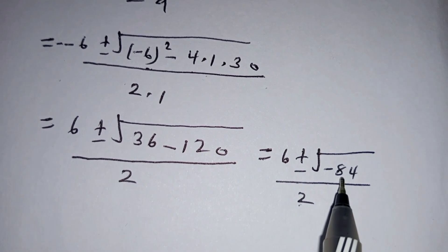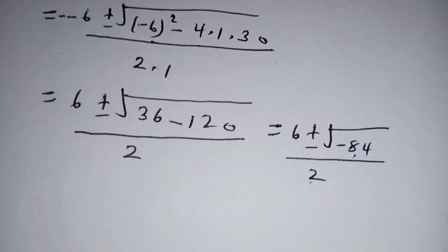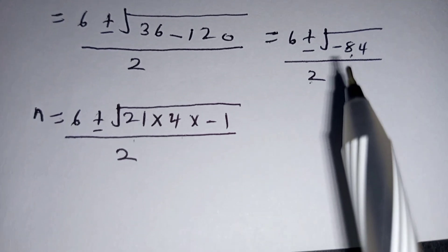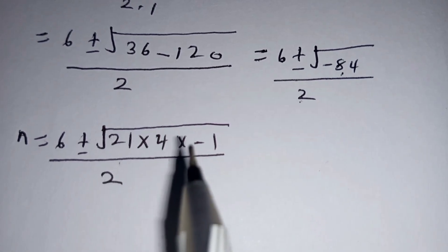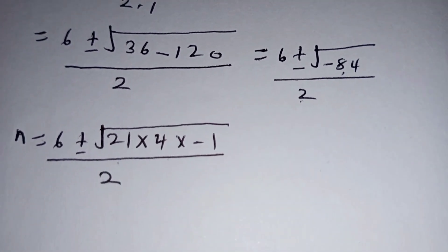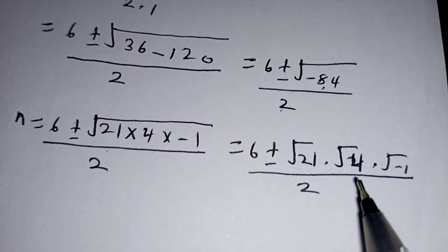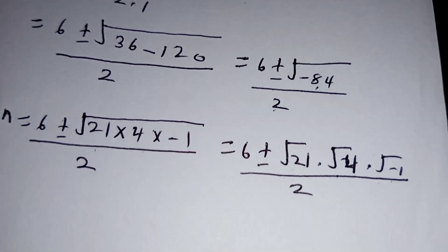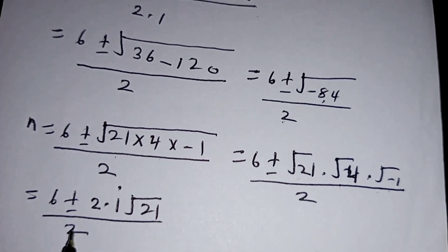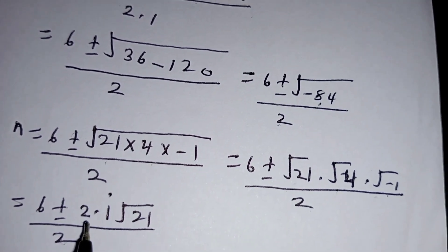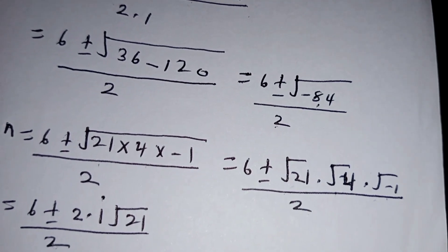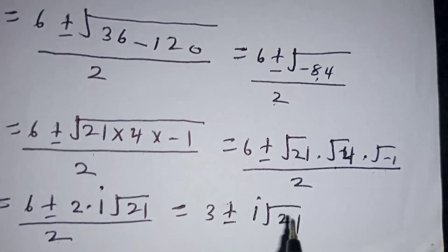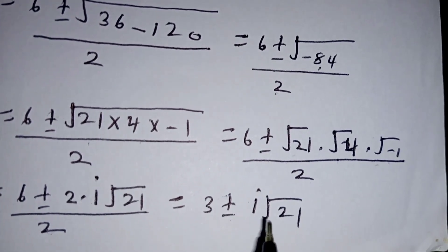Negative 84 can be written as 21 times 4 times negative 1. So 21 times 4 times negative 1 is the same as negative 84. We can separate the square root to obtain: square root of 4 is 2, and the square root of negative 1 is i. Clearly, you can divide 6 by 2 to obtain 3, and you can divide 2 by 2 to obtain 1. So our value of n is 3 plus i root 21 or 3 minus i root 21.